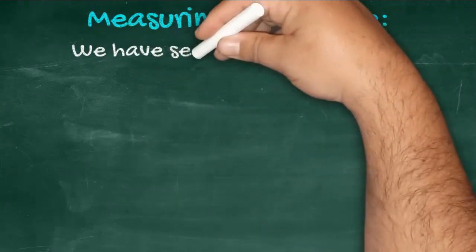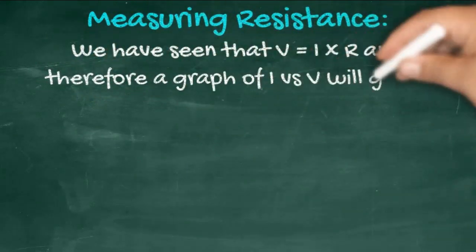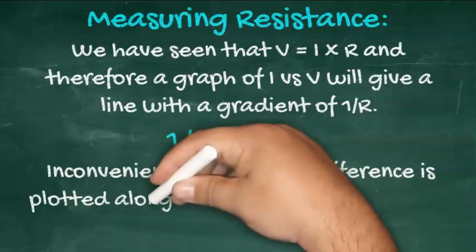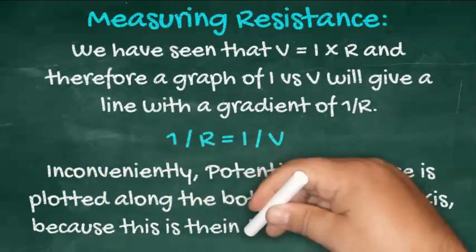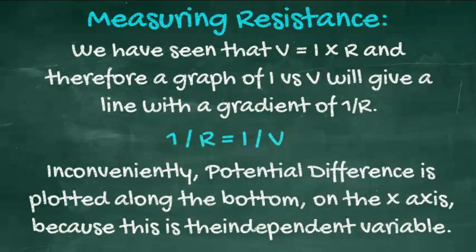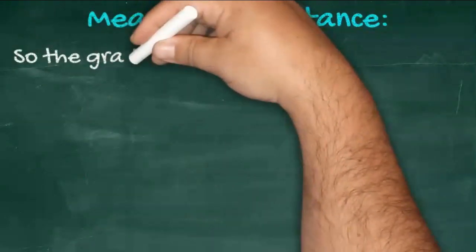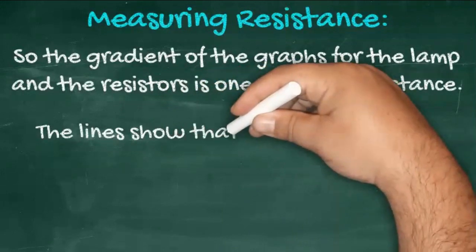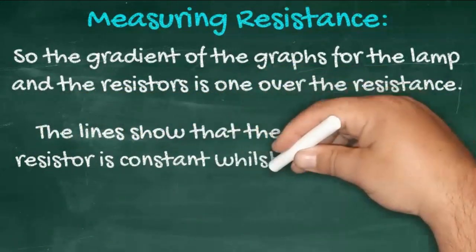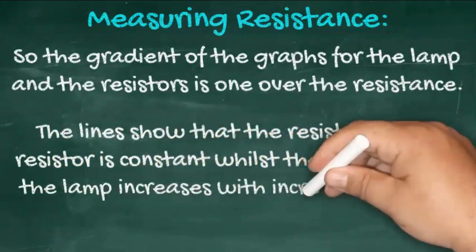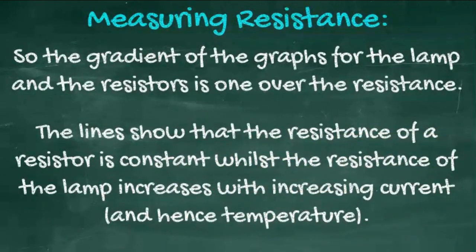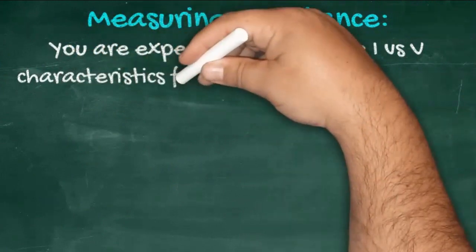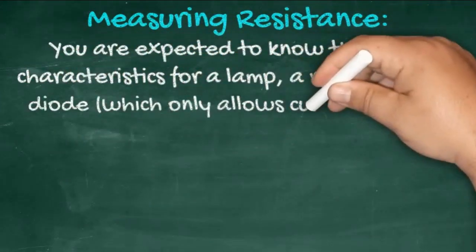We have already seen the equation V equals IR, which we said was Ohm's law, and therefore a graph of I versus V will give us a gradient of 1 over R. 1 over R, inconveniently, because potential difference is plotted along the bottom and is the independent variable. So the gradient of the graphs for the lamp and for the resistors is 1 over the resistance. The lines show, therefore, that the resistance of a resistor is constant, whilst the resistance of the lamp increases with increasing current. And as the current increases, so does the temperature. Hence the line drawn for the lamp is a curve.